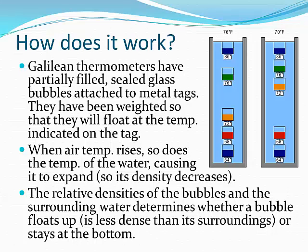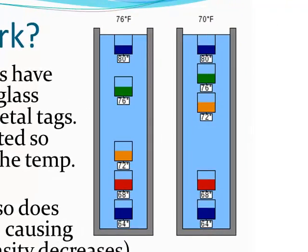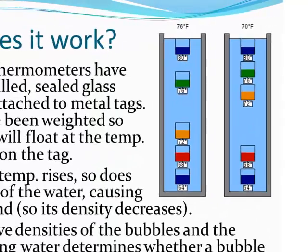Looking at the Galilean thermometer and how it actually works: Galilean thermometers have partially filled sealed glass bubbles attached to metal tags. They've been weighted so that they will float at the temperature indicated on the tag. As air temperature rises, it changes the temperature of the water inside, causing the water to expand so its density decreases. Whether a bubble floats up or sinks depends on the relative densities of the bubble and the surrounding water. In the example on the left, the tag reading 76 degrees is floating, so it's 76 degrees. On the right, the 72 degree marker is floating, so the temperature is 72 degrees.